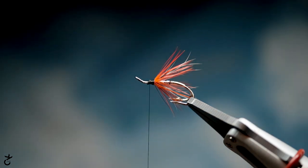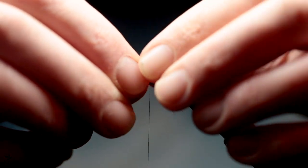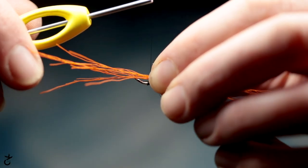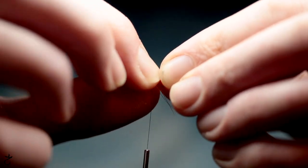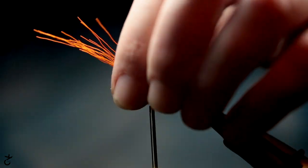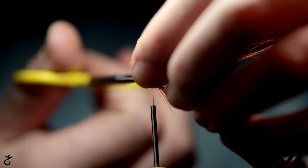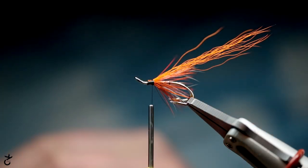Next I'm going to tie in the wing, which is just orange bucktail. Again really light, nothing too much, because you want to keep your body nice and slim. You want to leave a nice bit of room at the front here for the rest of the fly too.